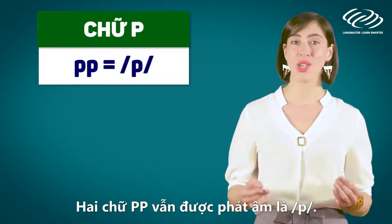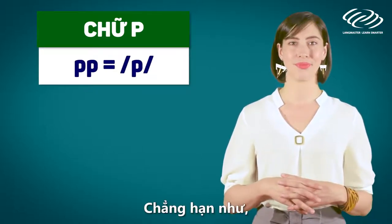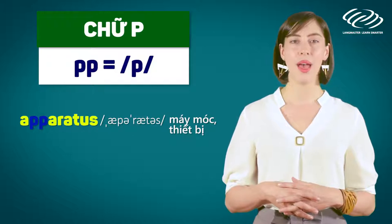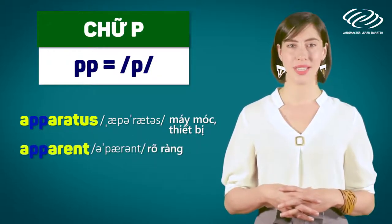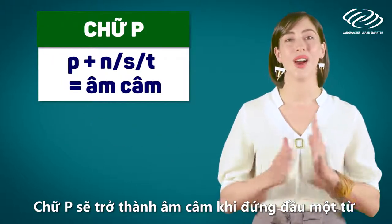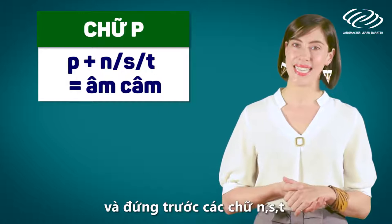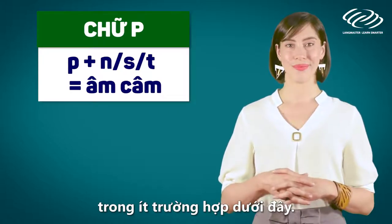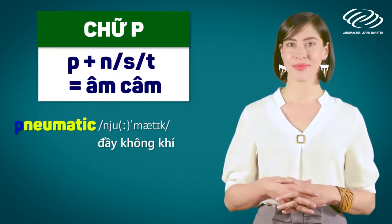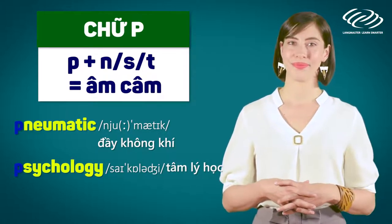Double P's are also pronounced as /p/. For example: apparatus, apparent. The letter P is silent when it is at the beginning of a word and when it comes before the letters N, S, and T. In these cases: pneumatic, psychology.